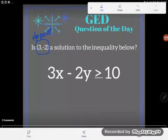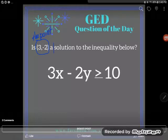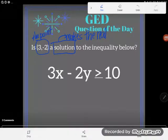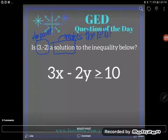So is the point (3, -2) a solution to the inequality below? I'll remind you what it means for something to be a solution. A solution means it makes the relationship true. Makes the relationship—this particular relationship below is an inequality—true.